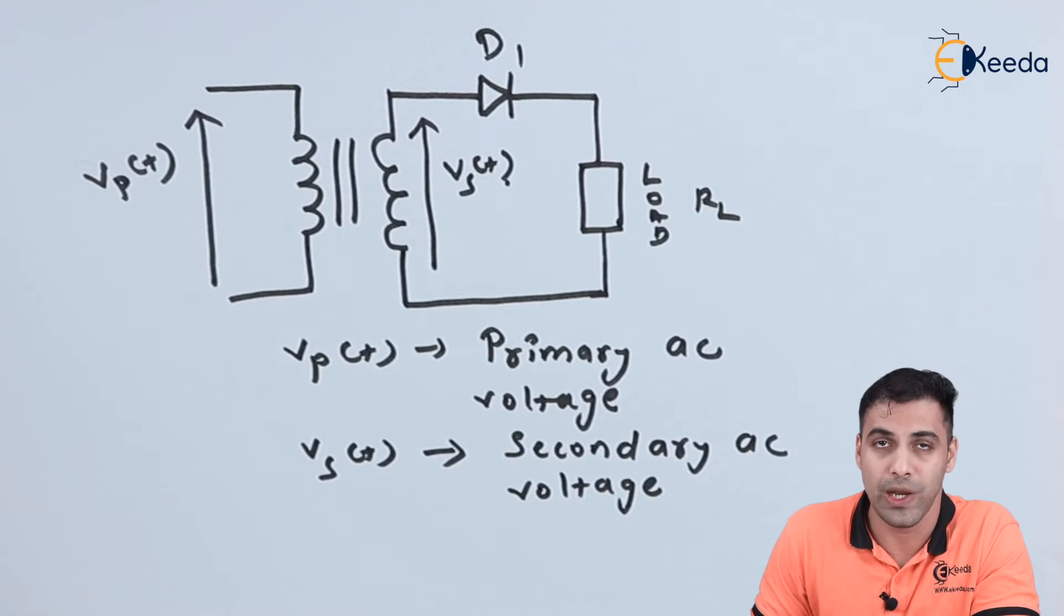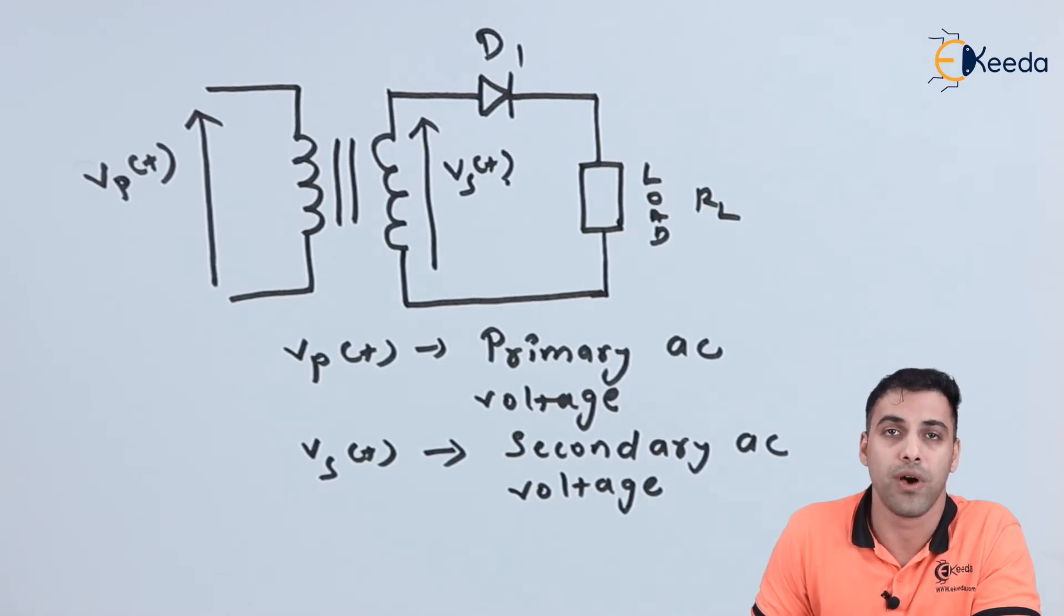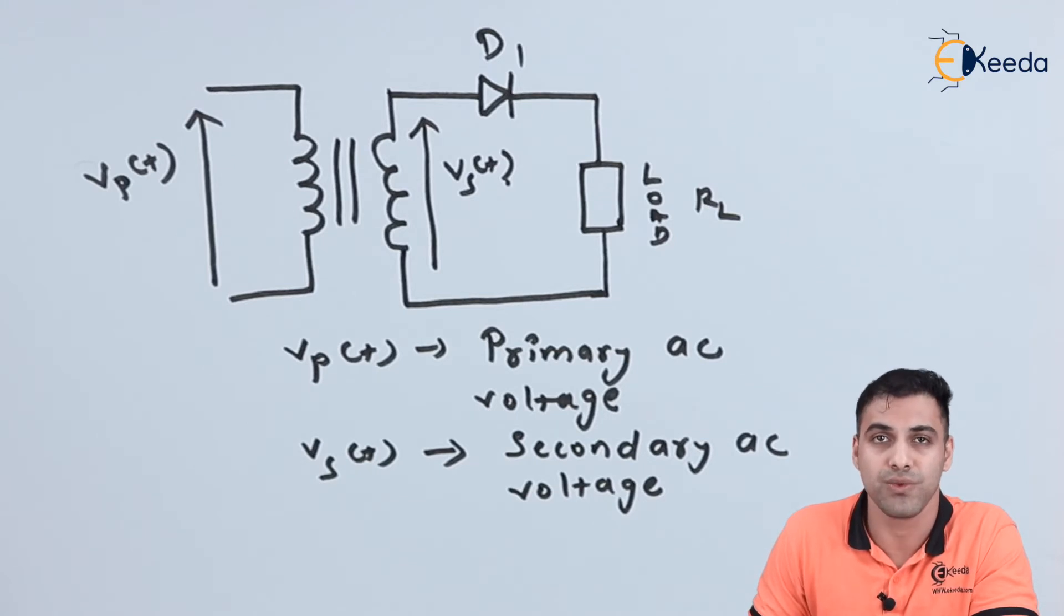In the upcoming lectures, we are going to calculate the value of DC voltage for a single-phase half-wave rectifier, the value of DC current, the value of load voltage, the form factor, and one more term I would like to introduce which is called the ripple factor.